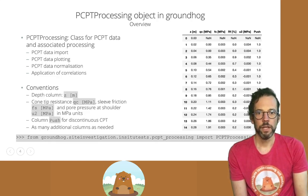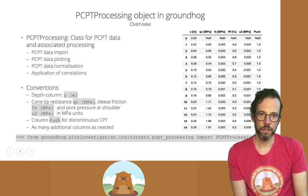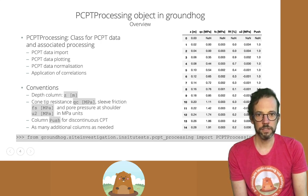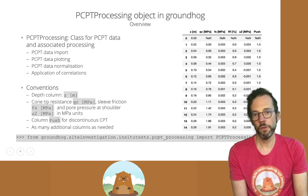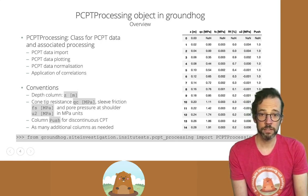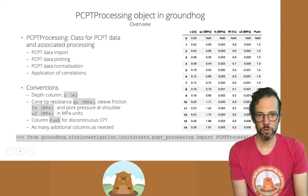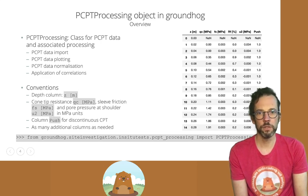That's where Groundhog aims to provide an answer. In Groundhog you have a class called PCPT processing which contains the necessary methods to import the data, to plot data, and to process data such as normalizations and apply correlations. All of that functionality is included within the PCPT processing class.